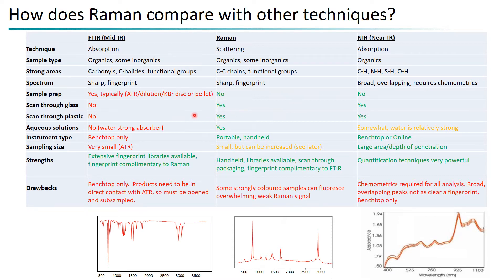A key difference between these two techniques is sample preparation: FTIR either requires preparation of a disk or subsampling with direct compression under an ATR crystal. You cannot scan through glass or plastic with FTIR because mid-infrared is extremely sensitive to those, as it is to water — whereas Raman is less sensitive for polar groups, so aqueous solutions are also acceptable. Near-infrared also has the ability to scan through plastic and glass, though with slightly more interference that must be accounted for when building libraries.